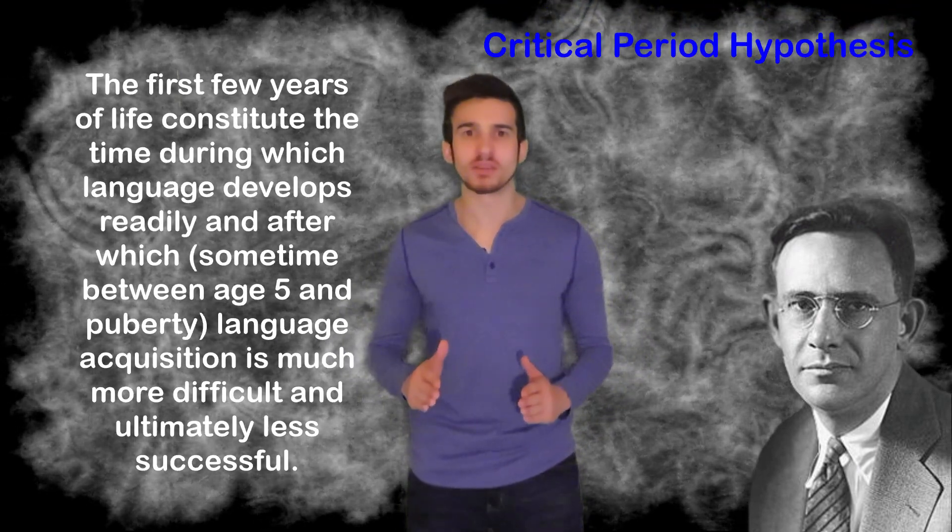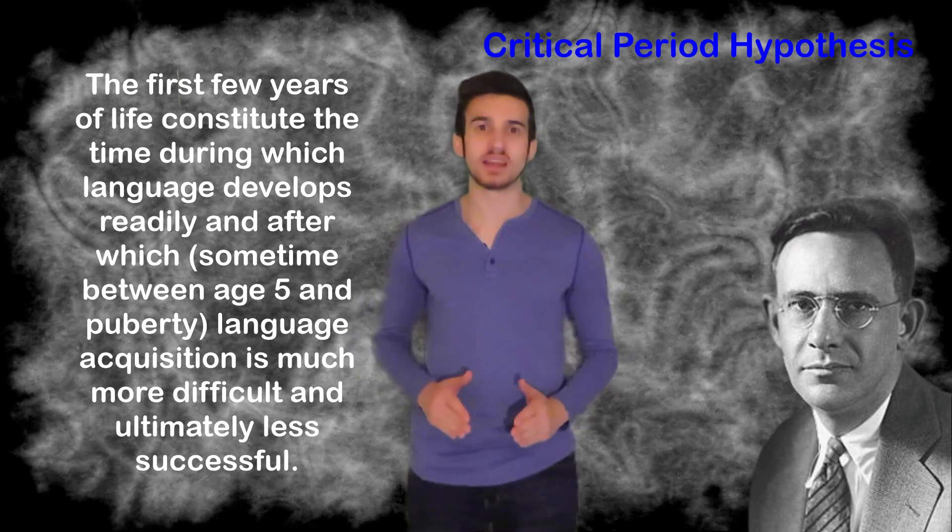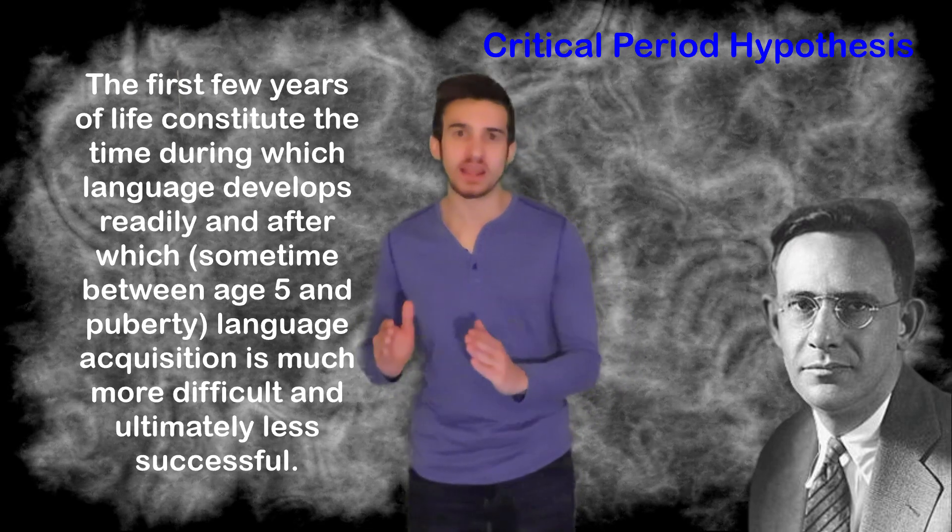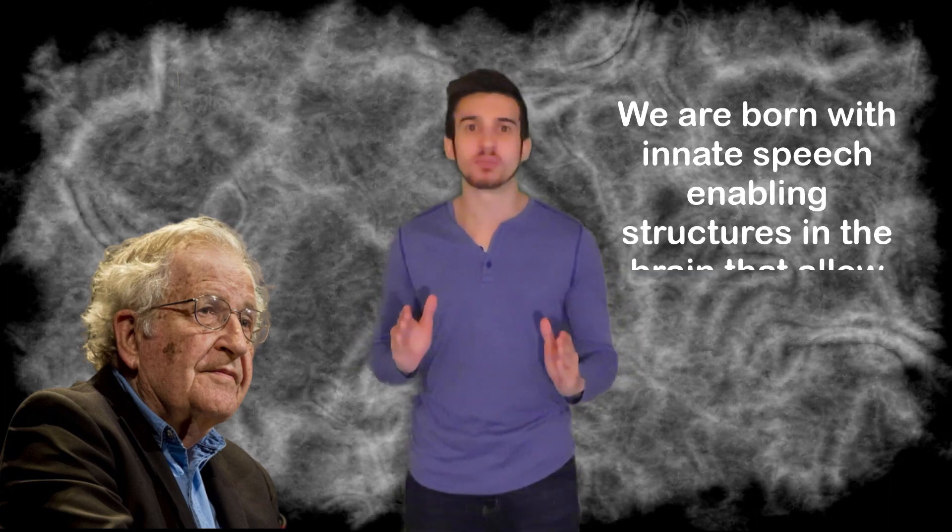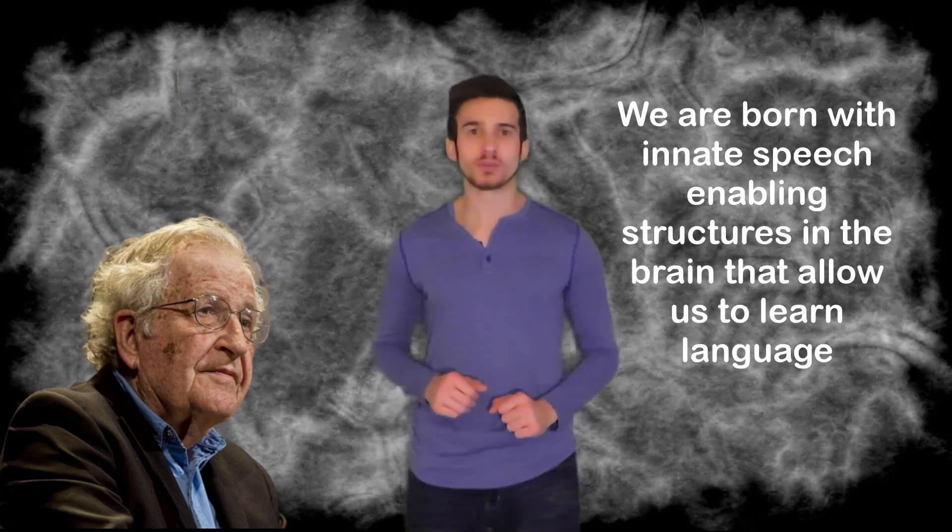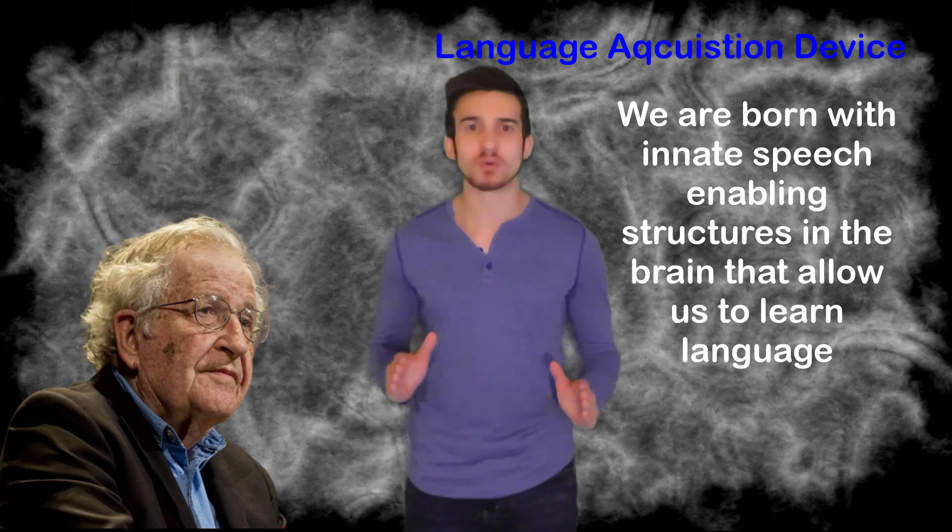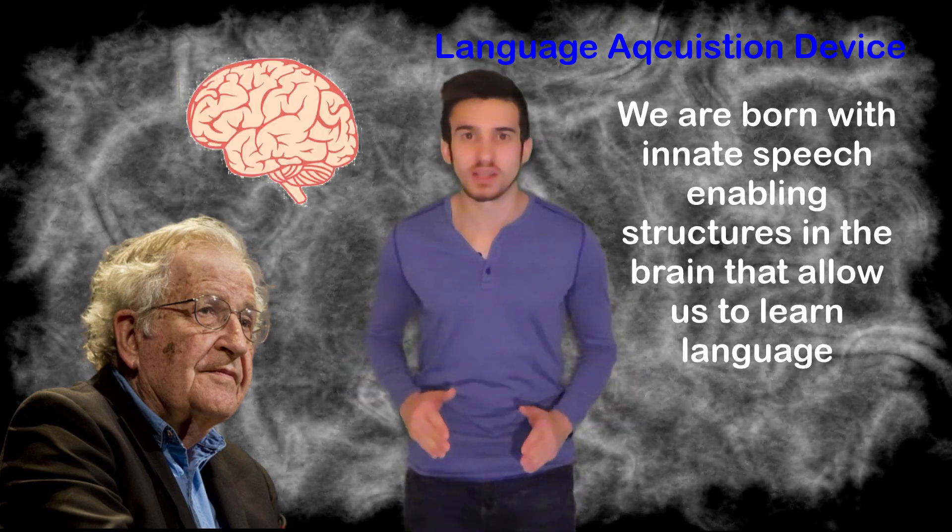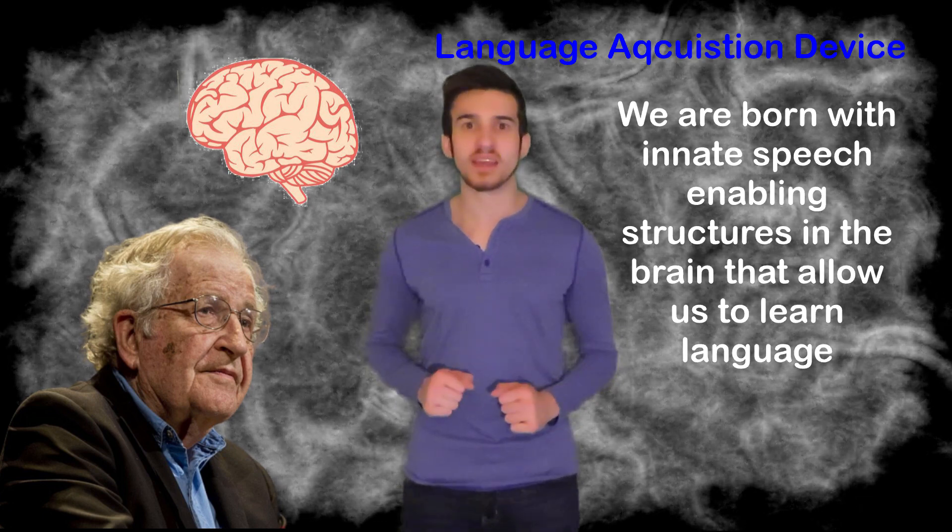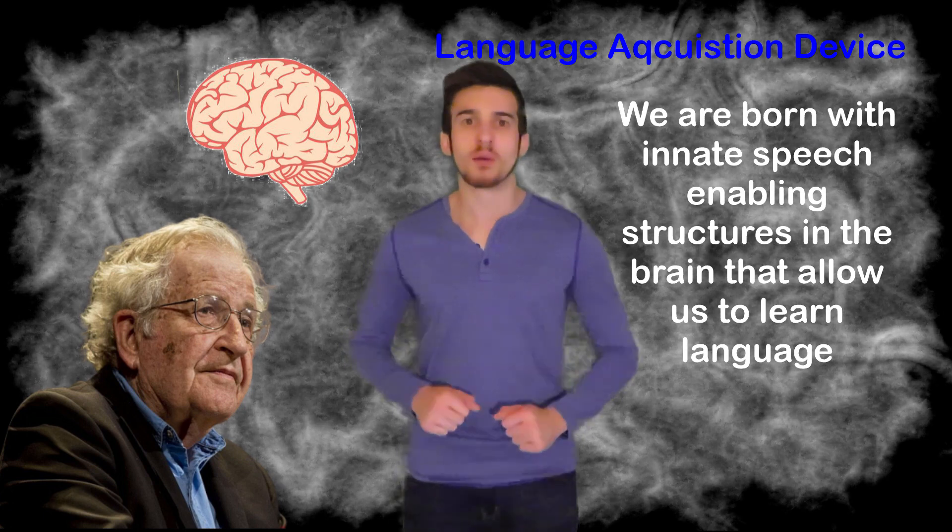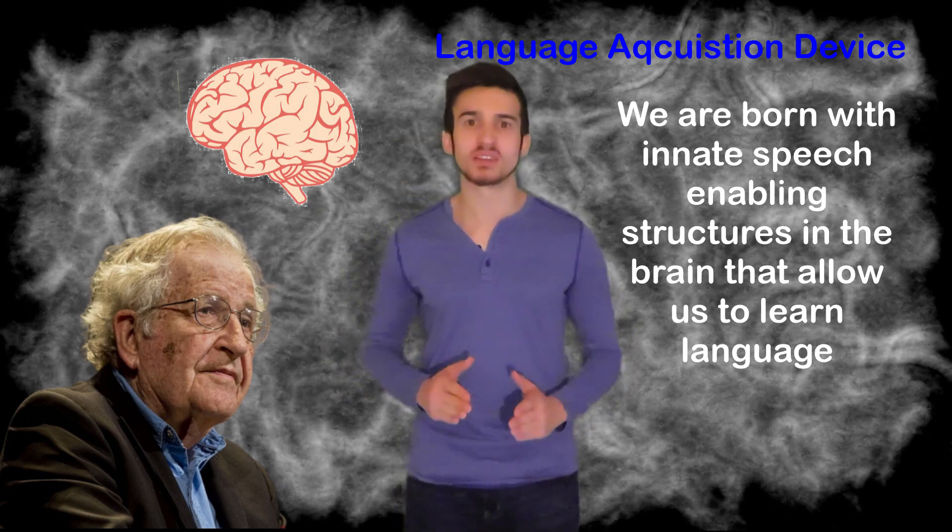In 1967, linguist Eric Lenneberg is going to further popularize Montreal neurologist Wilder Penfield's Critical Period Hypothesis. The Critical Period Hypothesis basically states that if children are not exposed to language by a certain age, they will be unable to acquire proper spoken language and comprehension. A cognitive psychologist and linguist, Noam Chomsky, will further Lenneberg's research stating that we are born with innate speech enabling structures in the brain that allow us to learn language. This structure is going to be referred to by Chomsky as the language acquisition device. Chomsky determined that language is biologically determined in the human mind and hence making it genetically transmitted. As a result, making language a product of nature and not nurture as psychologists previously theorized.